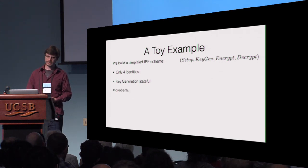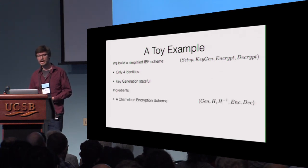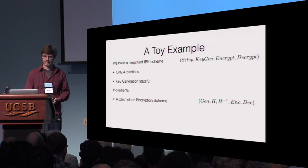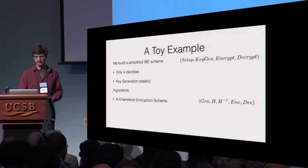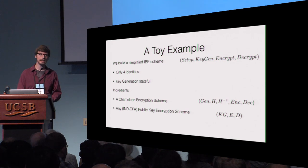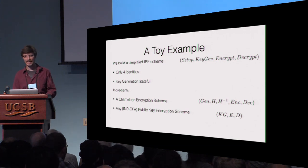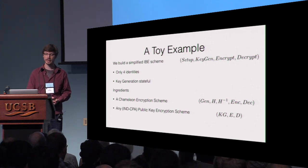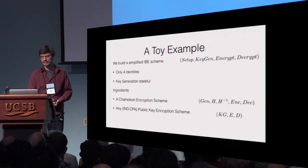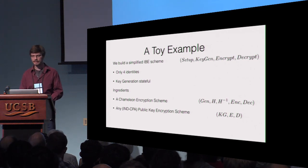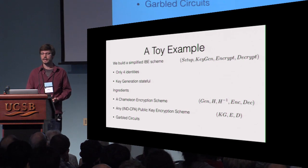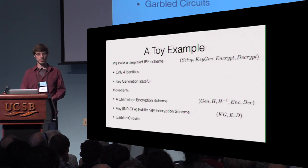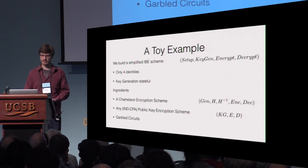As ingredients, we have: first, a chameleon encryption scheme with algorithms Gen, H, H-inverse, Enc, and Dec; second, a standard IND-CPA secure public key encryption scheme with algorithms KeyGen, Enc, and Dec; and third, as a crucial component, garbled circuits.